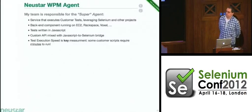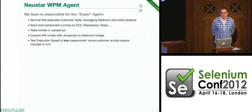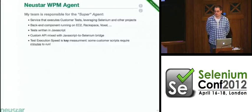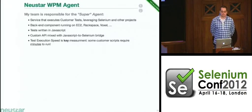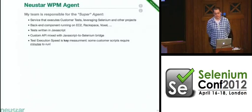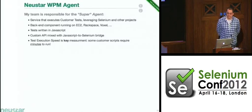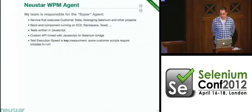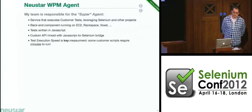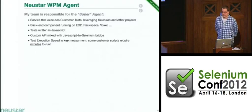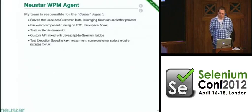Just a few words about the Newstar WPM agent. This component is part of our back-end and it's what executes our customer scripts. It's a service that we run on different cloud services — EC2, Rackspace. Our tests are completely written in JavaScript. We provide a bridge between JavaScript and Selenium plus a lot of other APIs used by our customers. The most important aspect is how long it takes to execute scripts and report information about the status of the page.